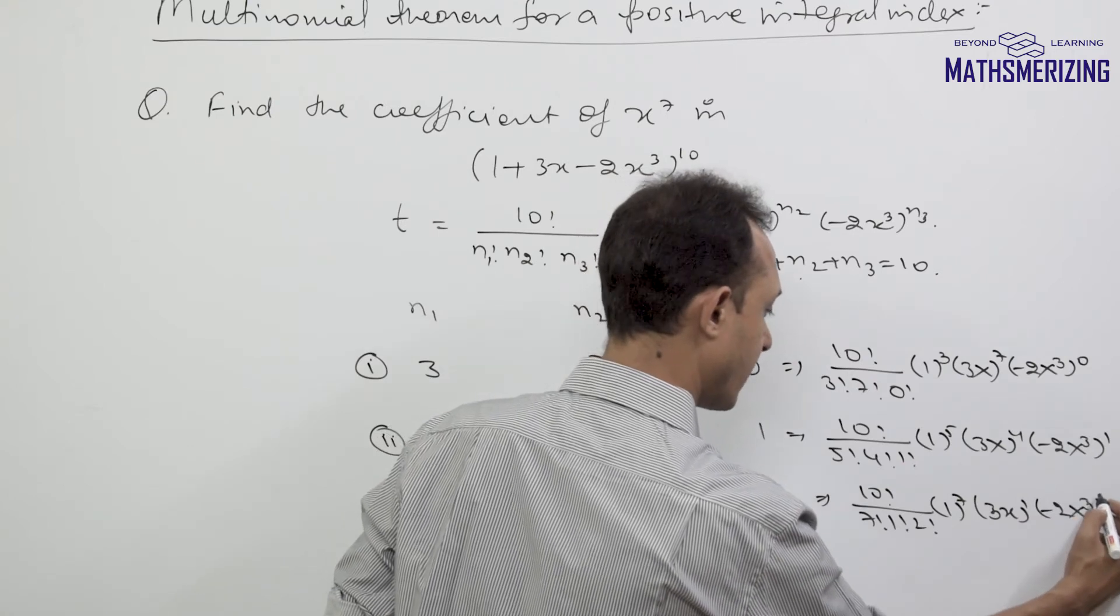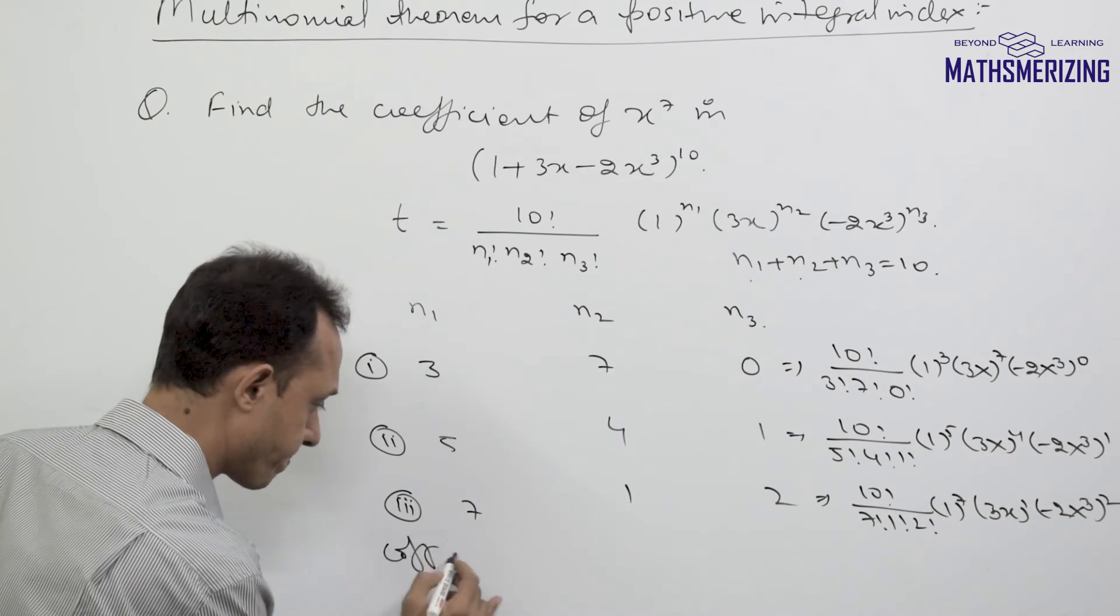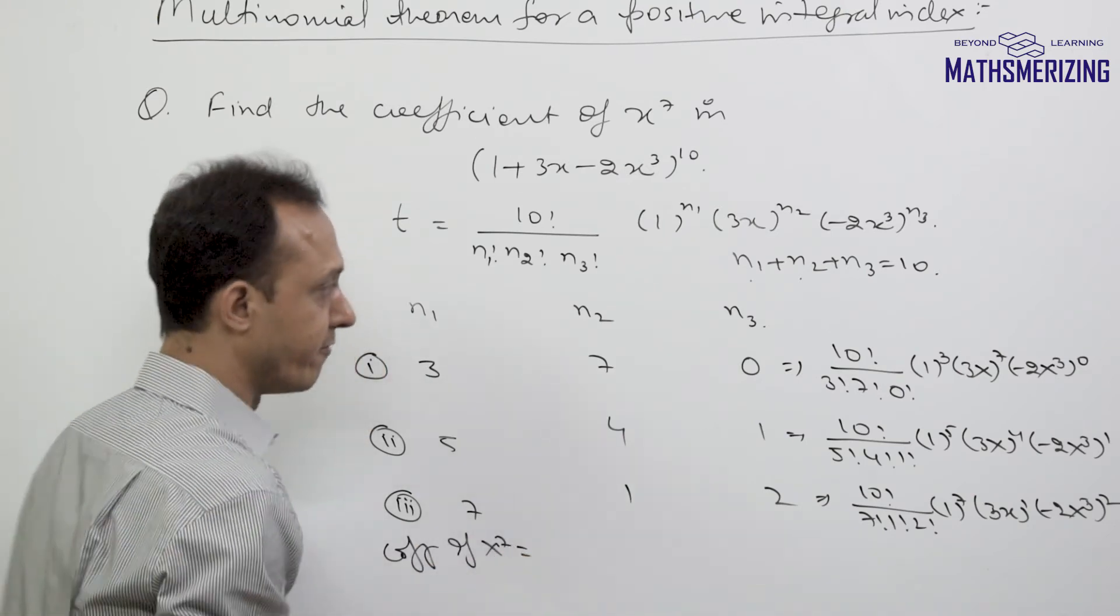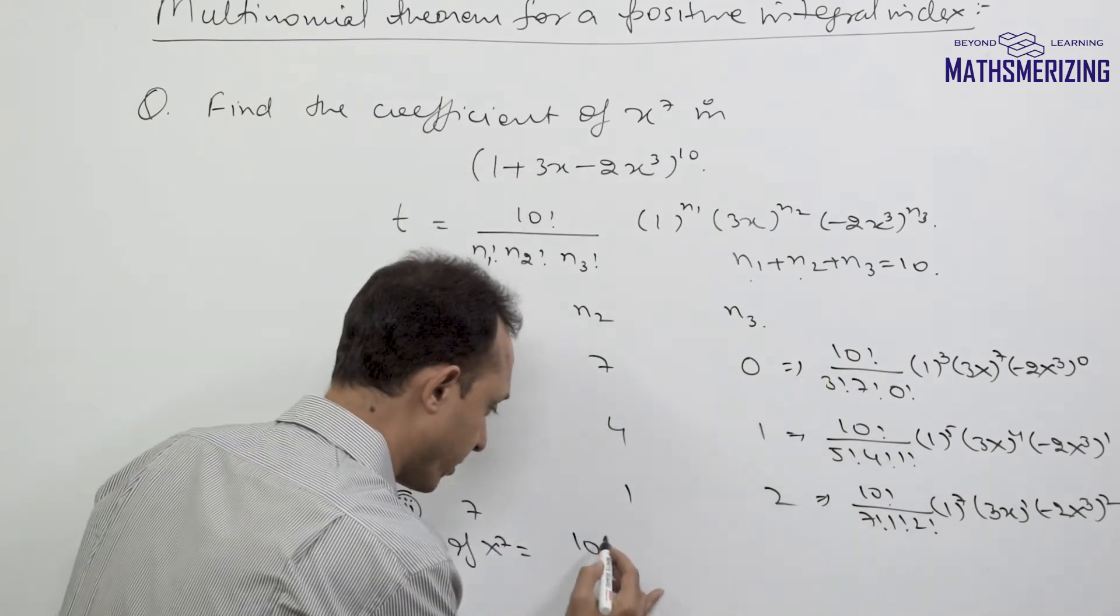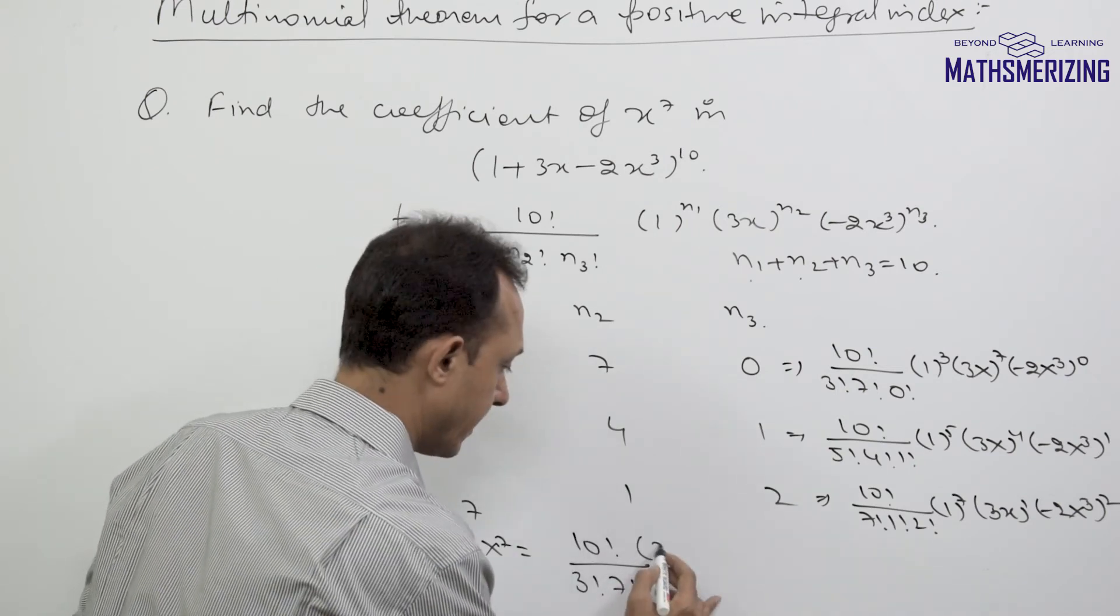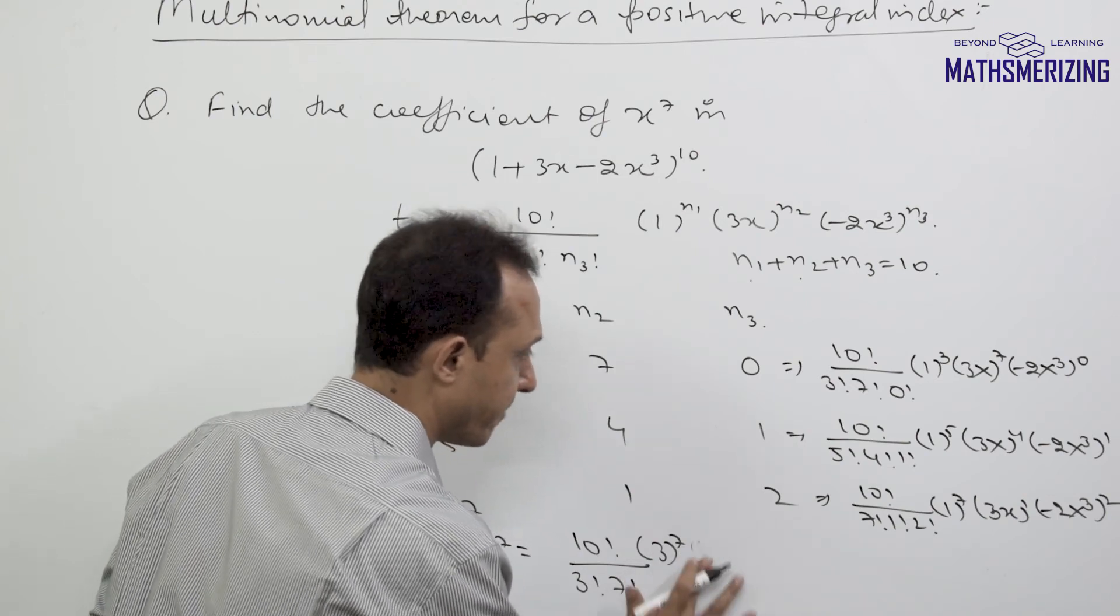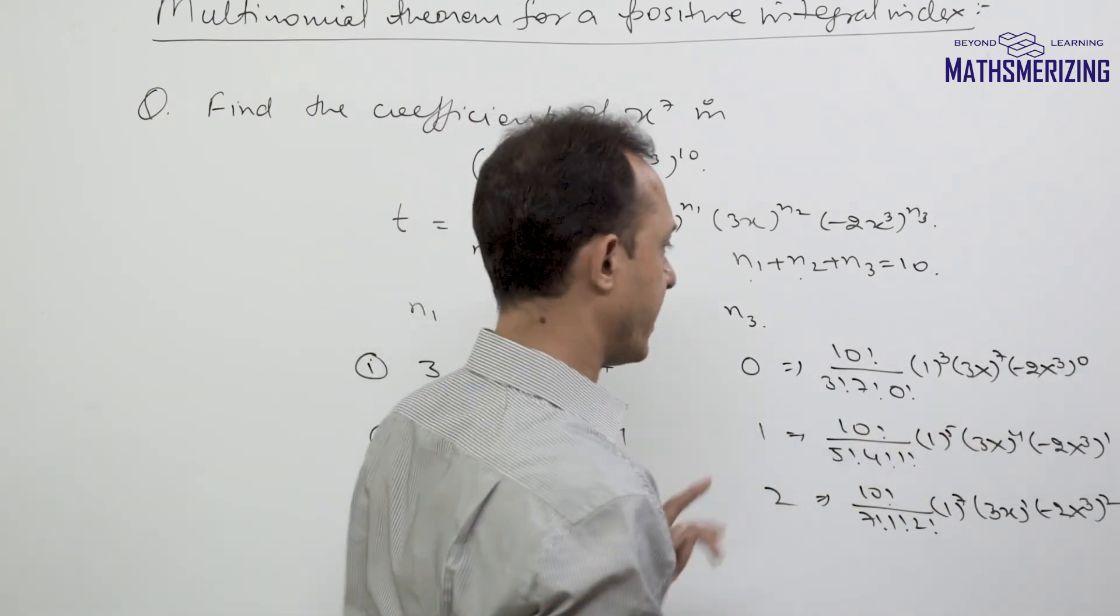If I just write the coefficient, then the coefficient of x^7 will be 10!/(3! 7!) times 3^7, since (-2)^0 will be 1.